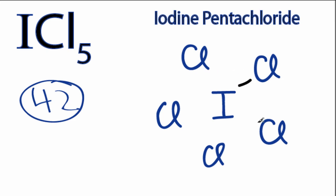Next we'll draw single bonds between the iodine and the chlorines to form chemical bonds. Each of these lines is 2 valence electrons, so we've used a total of 10 valence electrons at this point.